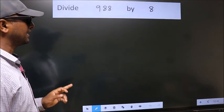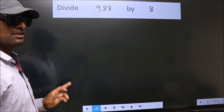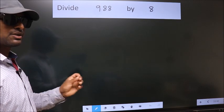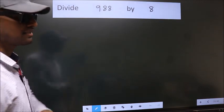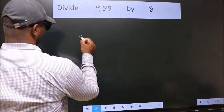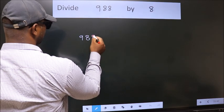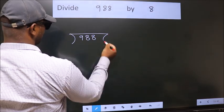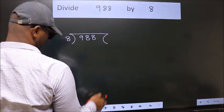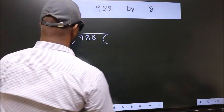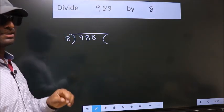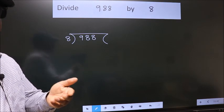Divide 988 by 8. To do this division, we should frame it in this way. 988 here, 8 here. This is your step 1. Next,